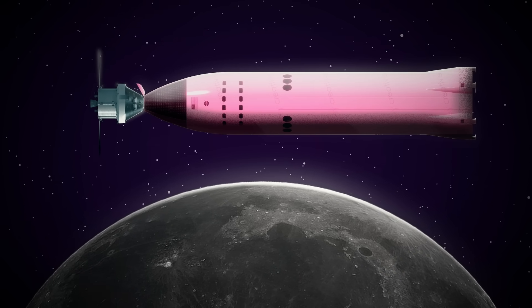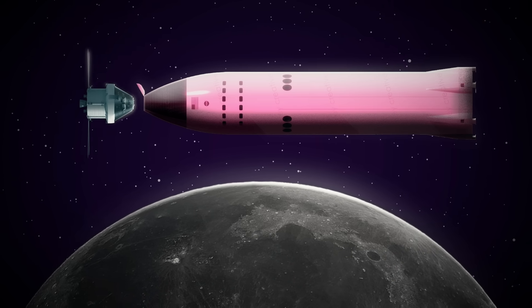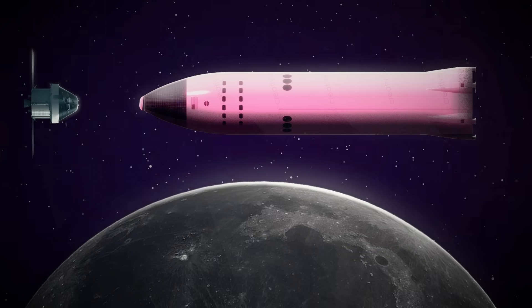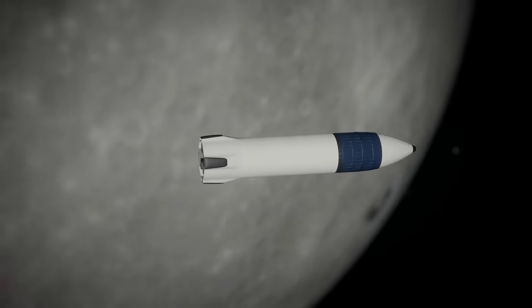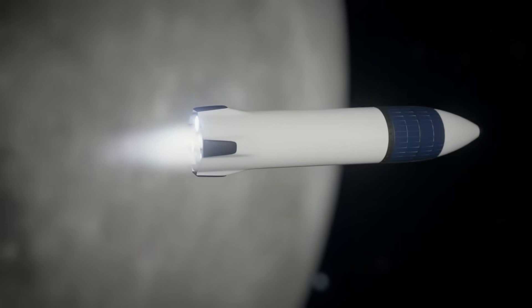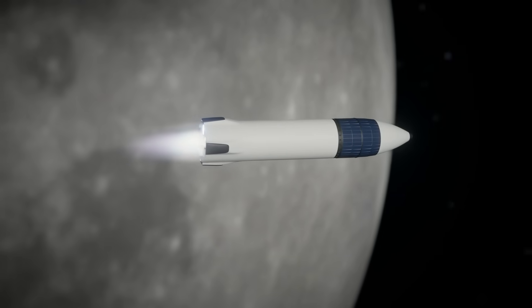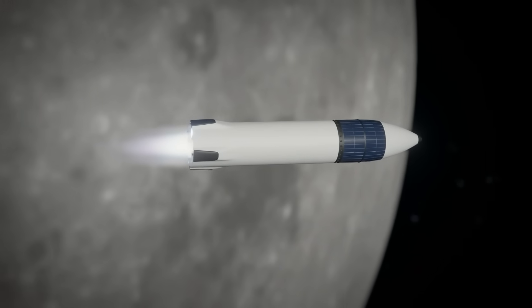With two crew members on board, the Starship is going to release from Orion and head towards the surface. To do this, it's probably going to use a burn from the main Raptor engines. This will slow the ship down enough to be caught in the gravity well of the Moon, and pulled into the surface.